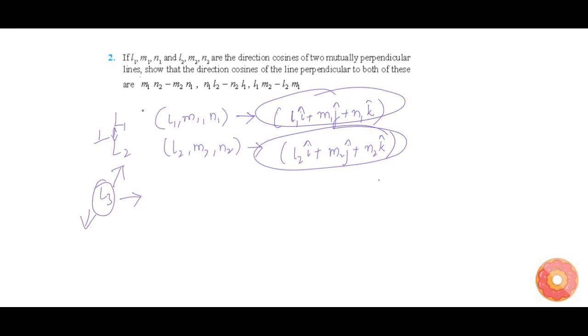Therefore, it is the cross product of these unit vectors. Cross product of unit vectors is nothing but the unit vector, so we will directly get the DCs of the line L3.